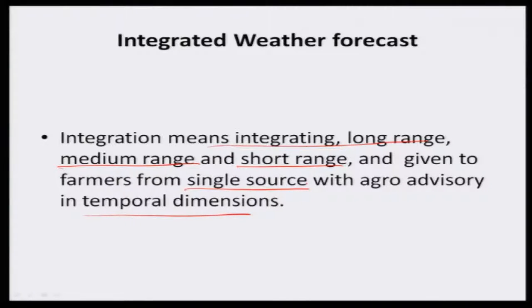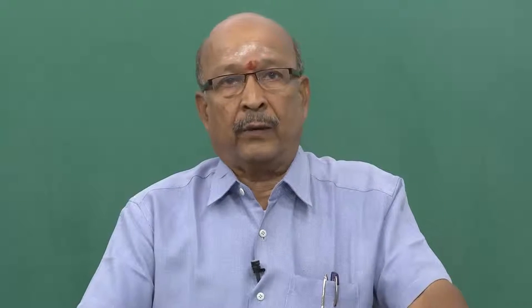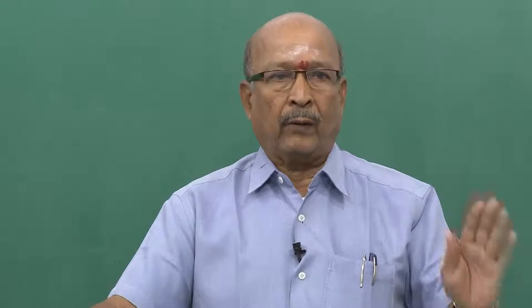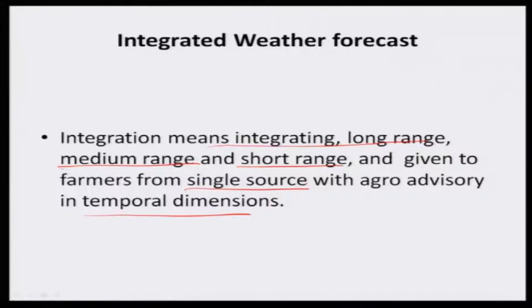Single source and temporal dimension. In the last class, we saw that now-casting is given by IMD, short range weather forecast is given by IMD, long range is also given by IMD, medium range by two organizations — IMD as well as TNAU — and seasonal climate forecast is given by TNAU. So if this information is derived from two sources, farmers may not be very interested to implement the agro-advisory given by these organizations. So we have to integrate — only IMD must undertake the responsibility of giving all forecast information to the farmers, and that too on a temporal basis.